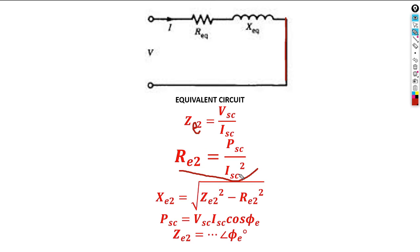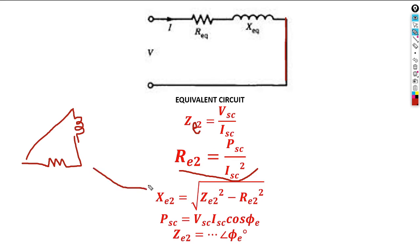Recall from Electrical 2 that a pure resistor and a pure inductor form the total impedance. Applying the Pythagorean theorem gives us the equation to find Xeq as the unknown. To determine the power factor angle, if you know the short circuit current, short circuit voltage, and short circuit power, you can determine the power factor of the transformer.